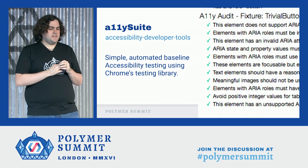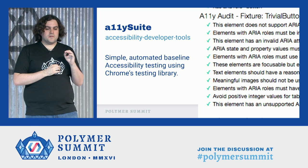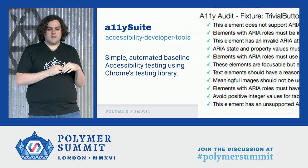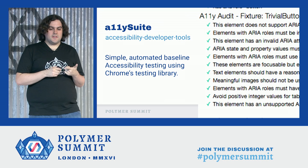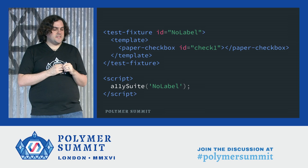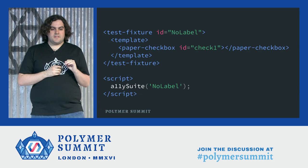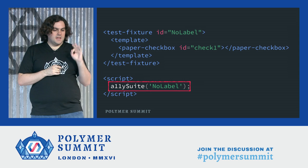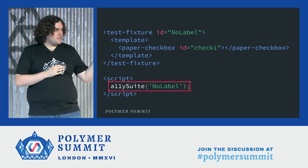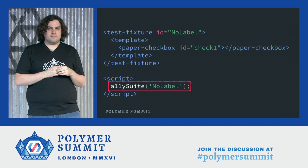The last WCT add-on I want to talk about is the accessibility suite. By using Chrome's accessibility developer tools, you can automatically test some baseline accessibility for your element — like making sure your labels are readable for those with color vision deficiency, or that the ARIA attributes are set correctly for screen readers. You can use the accessibility suite by specifying a test fixture and calling the a11y suite function with that test fixture, and this will do all the work for you and give you a detailed report in your testing.